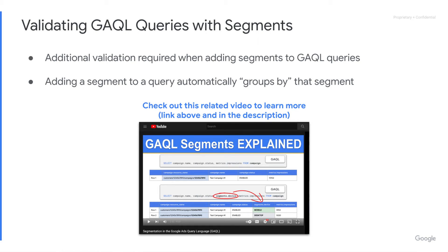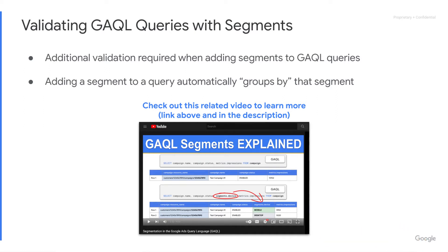There is some validation that needs to be done around segments, and this is due to the way that segments work. When you add a segment to your query, it's going to automatically group by that segment. Any metrics that exist within the query are going to be bucketed by that segment — an example being campaign.name, segment.device, metrics.clicks. Instead of just seeing the campaign and clicks associated with it, you're going to see the campaign, all devices associated with that campaign, and then the clicks for those devices for that campaign. It's going to break that out and bucket it by that segment.